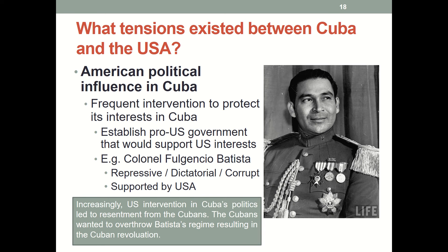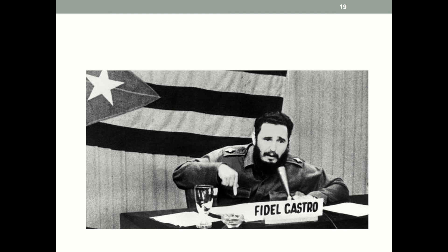What tensions already existed between Cuba and the United States? There was a lot of American political influence in Cuba — the USA frequently intervened to protect its interests, establishing pro-US governments that would support US interests, even giving support to General Batista. Cuba used to be ruled by General Batista, who was hugely unpopular due to his corrupt and dictatorial ways, which led Fidel Castro to lead a revolution to overthrow him. Initially the revolution wasn't seen as communist in nature, and historians believe Castro only became communist in 1960 or 1961. However, some of Castro's actions upset USA's long-standing practices in Cuba, which seemed to confirm Cuba's alignment with the USSR later on.